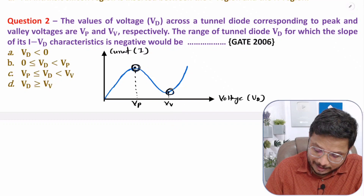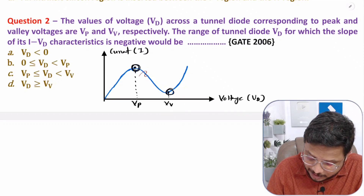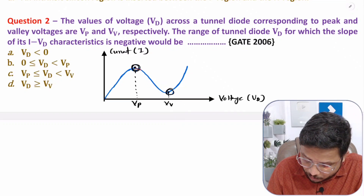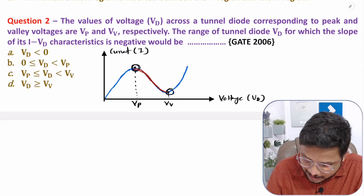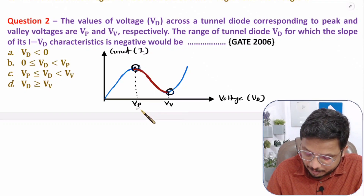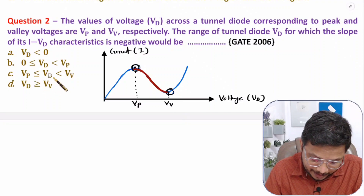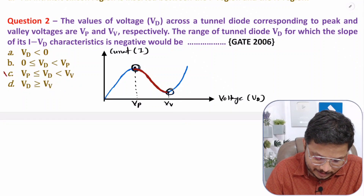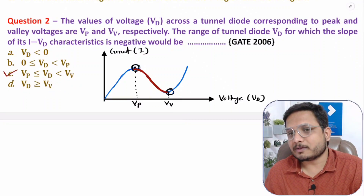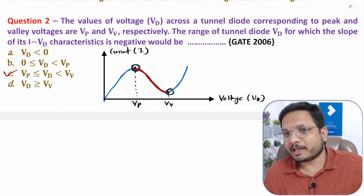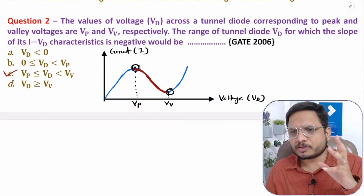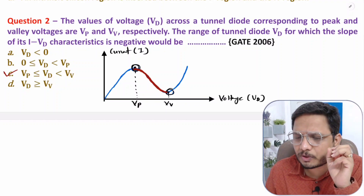The negative resistance region exists in between the peak and valley points — that is, the negative resistance is there in between Vp and Vv. So your answer is: Vd should be in between Vp and Vv. That is how simply we can understand the question, but your basics should be clear.